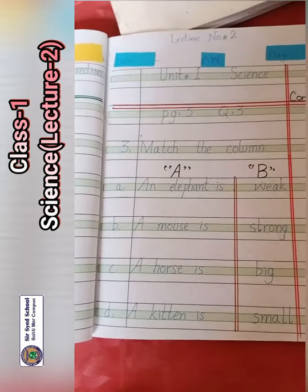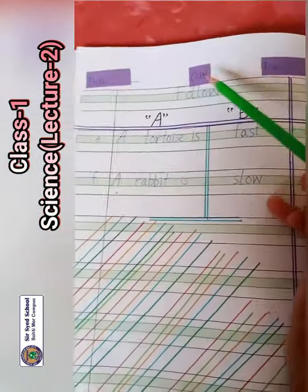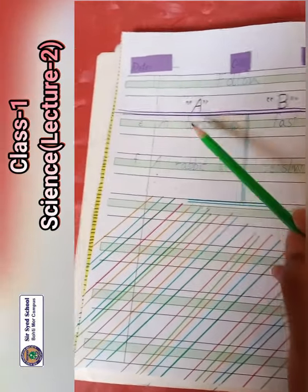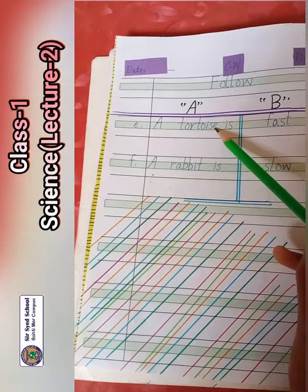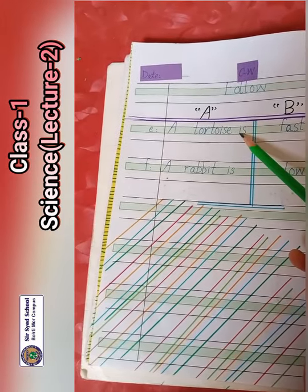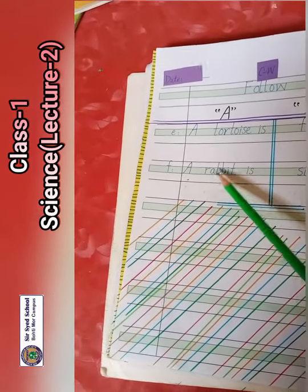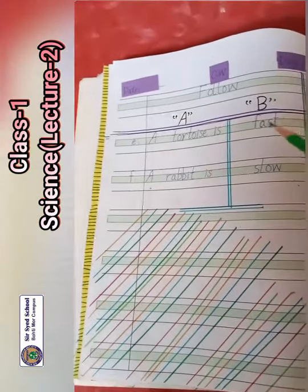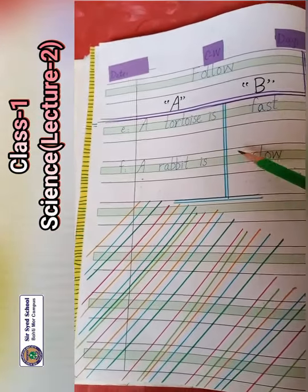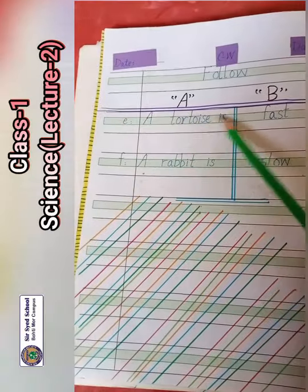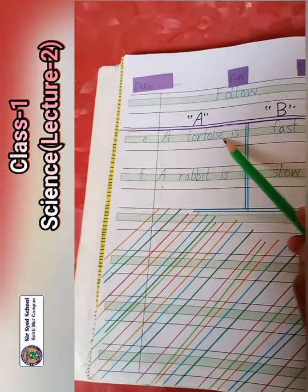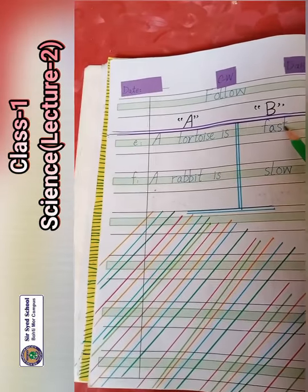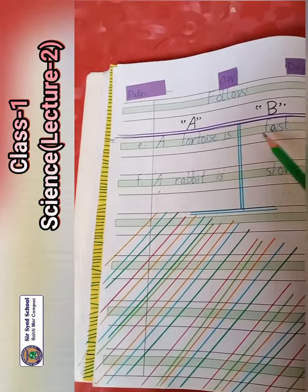Go on to the next page. Again column A and column B. Next items: a tortoise is — T-O-R-T-O-I-S-E, tortoise. A rabbit is — R-A-B-B-I-T, rabbit. In column B: F-A-S-T — fast; S-L-O-W — slow. A tortoise is slow — match it. A rabbit is fast — match it with this word.